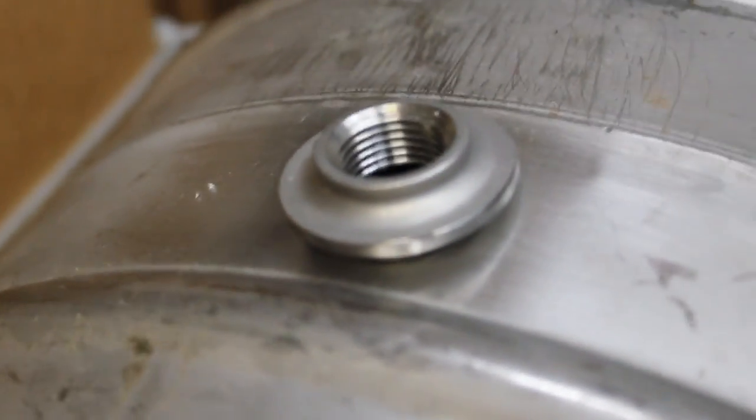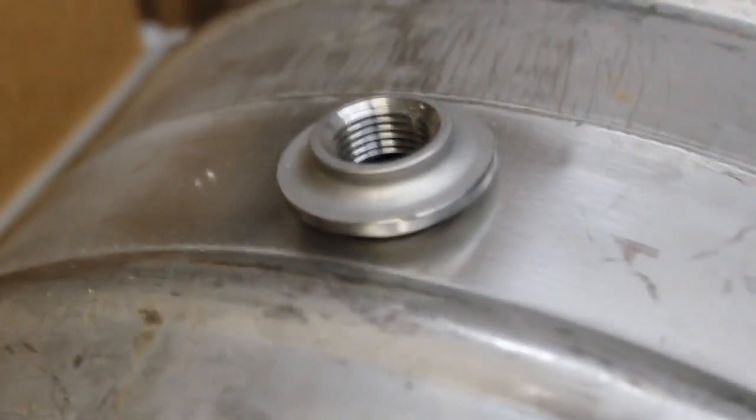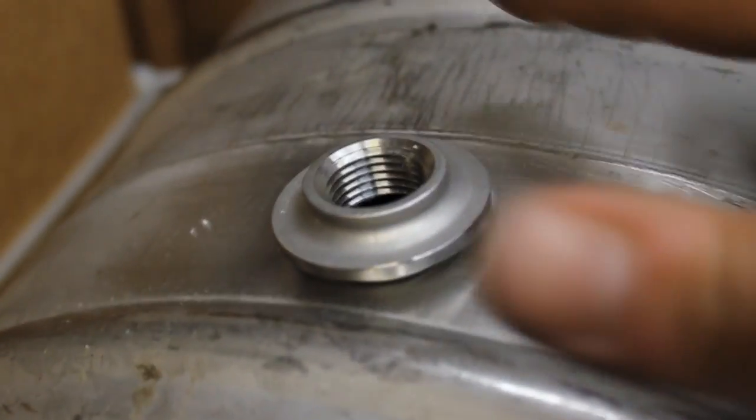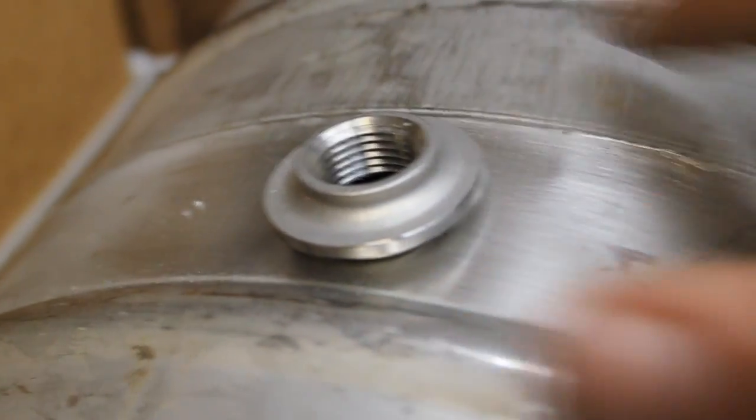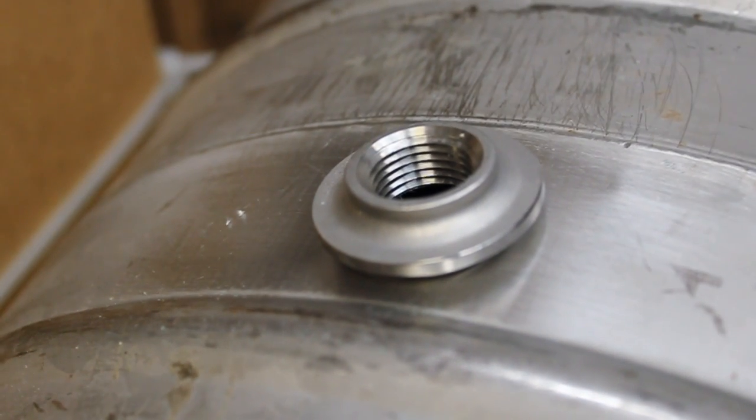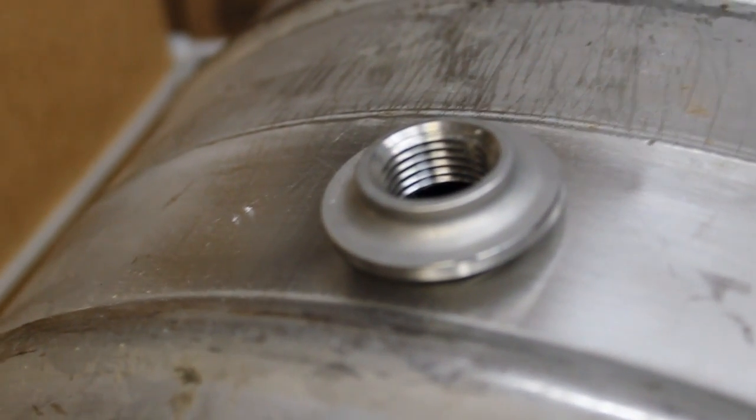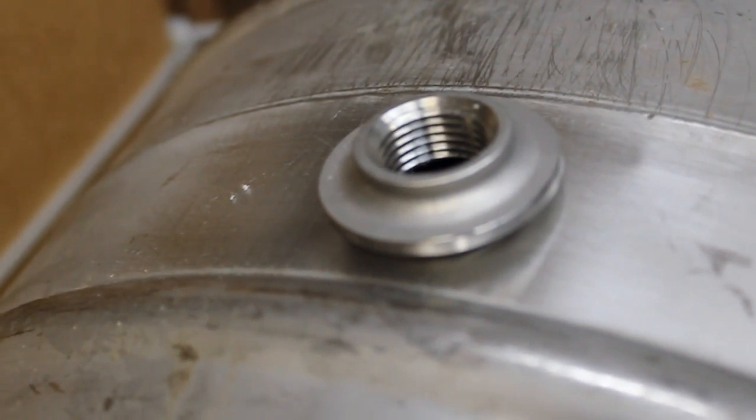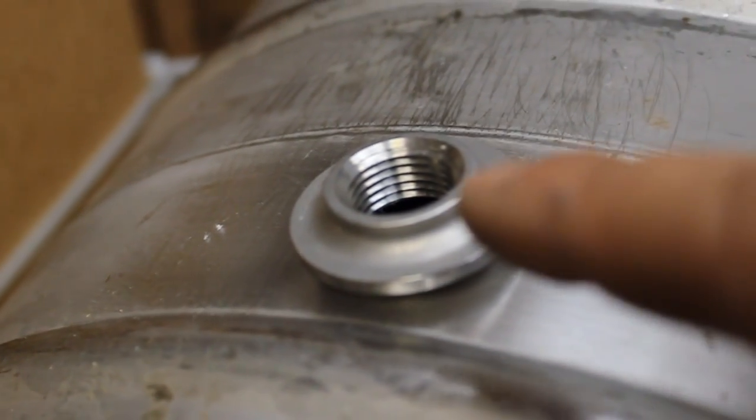Then you want to take either your map gas or propane torch and apply heat to the keg in a general area of this where the spud is going to go just to get the whole keg warmed up. Then you can start focusing your heat directly onto the spud.